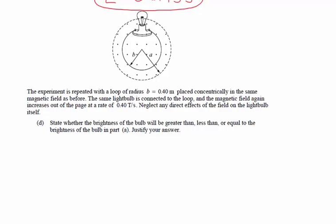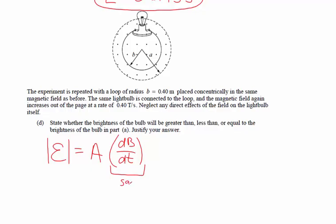To find the current, we use current equals voltage divided by resistance, so we need to look at how the induced EMF changes. The induced EMF magnitude was the area times the rate of change of the magnetic field. The dB/dt is still 0.4 teslas per second, but the area is now based on a radius of 0.4 meters, not 0.6 meters as before — our area is smaller. This means the induced voltage is smaller, and since current equals voltage divided by resistance, the current is smaller and the bulb will be less bright.